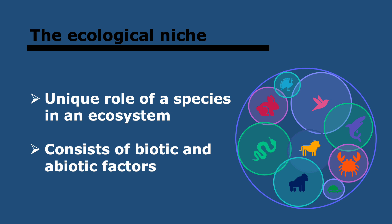Every species in an ecosystem fulfills a unique role, and that's its ecological niche. Ecological niches consist of both biotic and abiotic elements. Organisms have ranges of tolerance for abiotic variables that determine the habitat of a species — that's the area in the ecosystem in which it lives. Also, to minimize competition for food, species specialize by developing adaptations, and that changes the ecological niche.